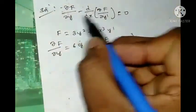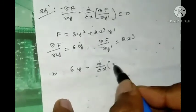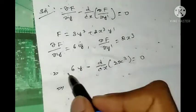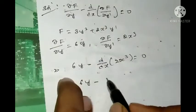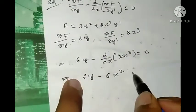Then we substitute these values in this equation: 6y - d/dx(2x³) = 0, and 6y minus the differentiation of this function is 6x², which equals 0.